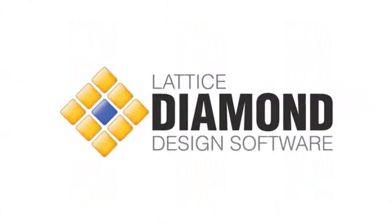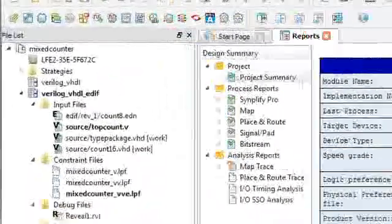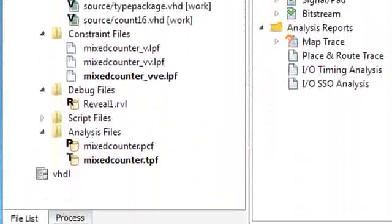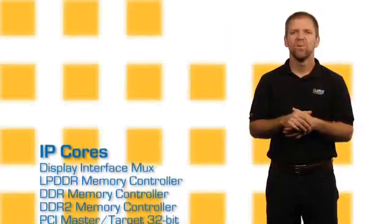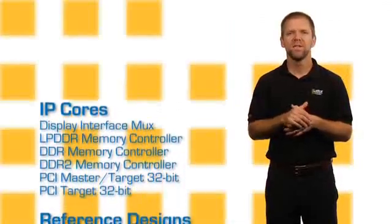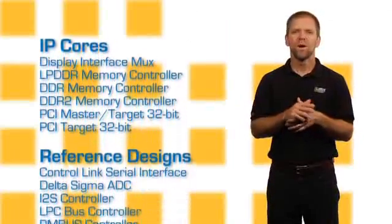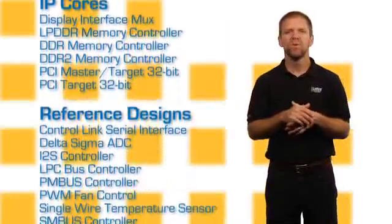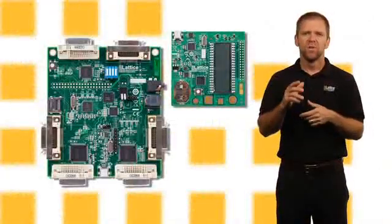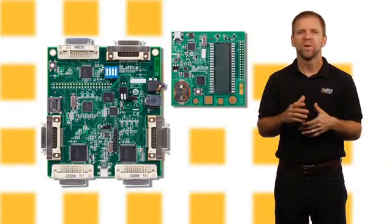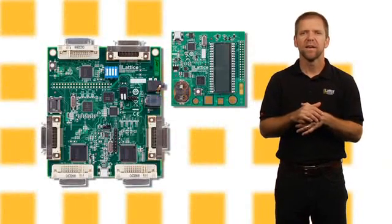You can start designing with Mach XO2 devices today using Lattice Diamond software, which can be freely downloaded from the Lattice website. Alternatively, you can use the free ISP Lever starter software, also available from the Lattice website. To enable quick and efficient design and deployment of common functions, more than 20 reference designs using Mach XO2 devices can be downloaded free, and two development kits will be available to accelerate evaluation of Mach XO2 devices.